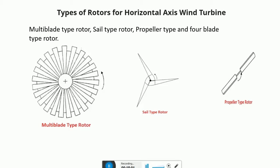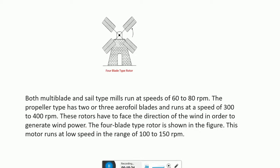In horizontal axis wind turbines there are four types of rotors. The first is the multi-bladed type. The second is the sail type rotor. The third is the propeller type. The fourth is the four-bladed type, also called the Dutch type.